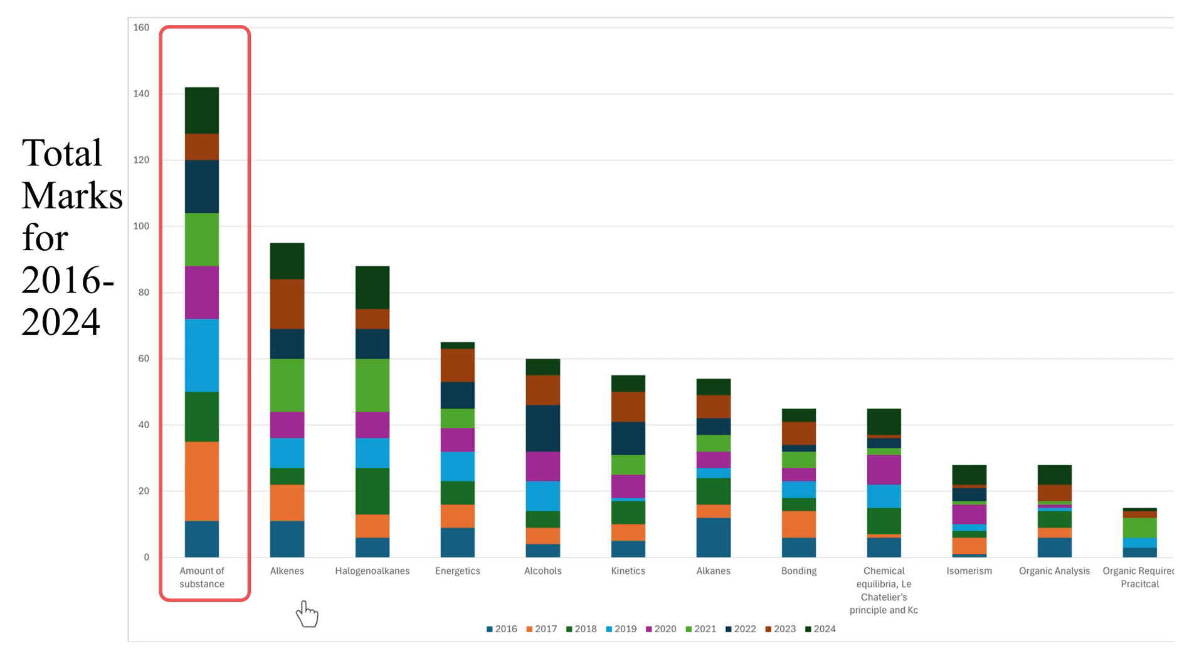As we work our way to the right hand side obviously each topic is worth fewer marks each year on average, but we can also see patterns developing for inconsistent topics that are not worth quite so much each year and have spots where they weren't assessed much one year but were assessed more the next. There is a little bit of a pattern that if something wasn't assessed one year it gets assessed more the next year.